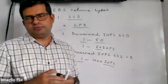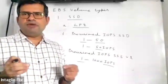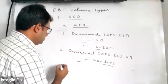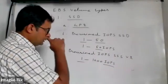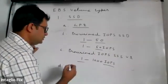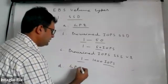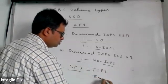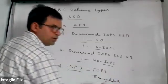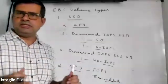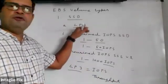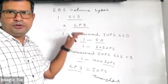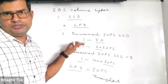If your requirement is even more, you can go with Provisioned IOPS SSD Version 2, which offers a 1:1000 ratio — for every 1 GB you can get 1000 IOPS. If your application needs both IOPS and throughput, you can go with GP3 (General Purpose 3), where both IOPS and throughput can be increased. To summarize: GP2 is the default; for IOPS only use Provisioned IOPS SSD (1:50); for more IOPS use version 2 (1:1000); for both IOPS and throughput use GP3.